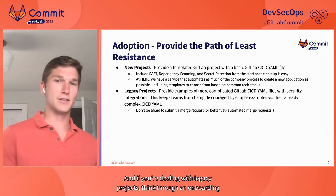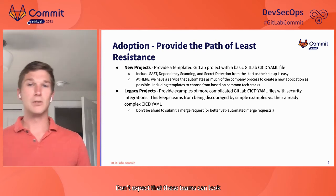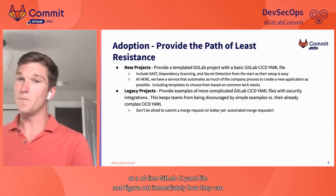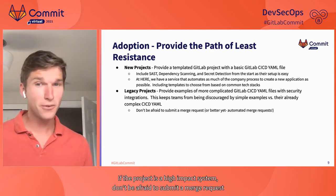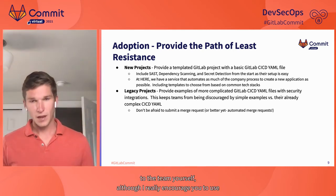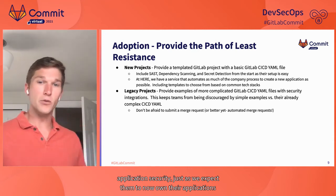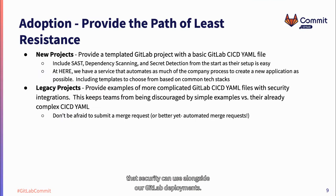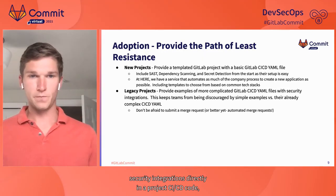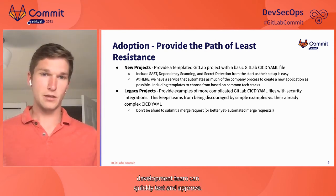If you're dealing with legacy projects, think through an onboarding experience expecting an already complicated project. Don't expect that these teams can look at a 10-line GitLab CI YAML file and immediately figure out how they can put that into their hundreds or thousands of lines of CI YAML. If the project is a high-impact system, don't be afraid to submit a merge request to the team yourself — though use this sparingly, as we need developers to own their application's security, just as we expect them to own their application's operations: DevSecOps. We've also been exploring an automated merge request system that lets us put security integrations directly into project CI code, adjust integration settings across all projects, and suggest version updates within a framework that the software development team can quickly test and approve.